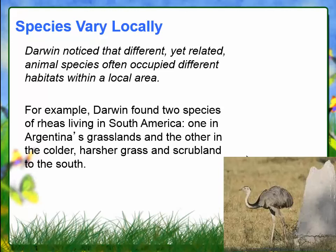As far as species varying locally, Darwin found two species of rhea living in South America. One lived in the grasslands and the other in the scrublands. There was the larger rhea and the smaller, lower rhea.